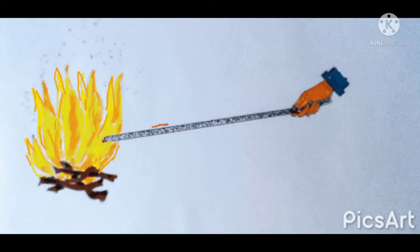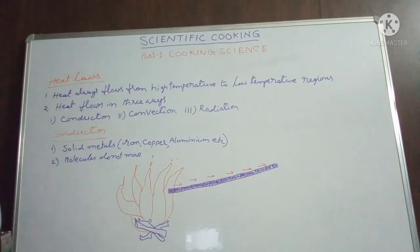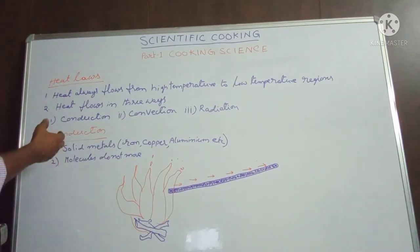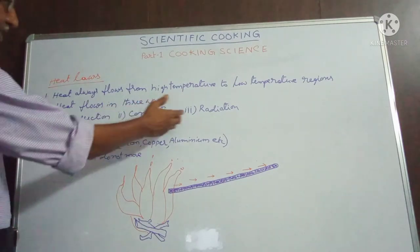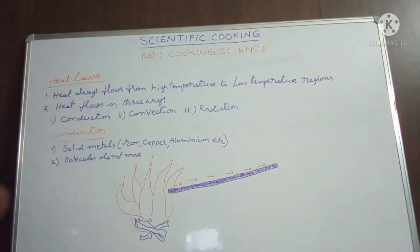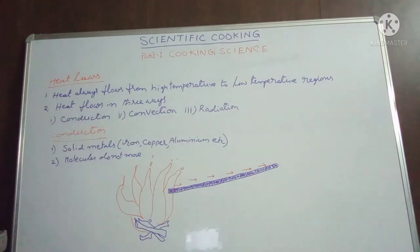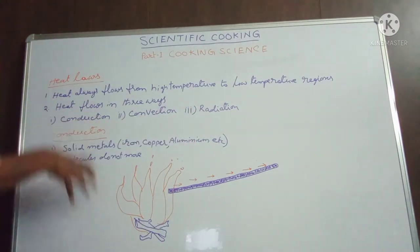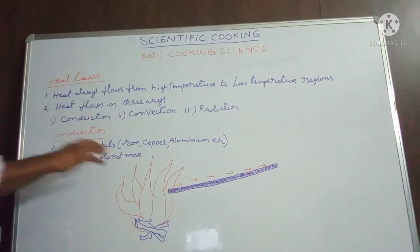Here, the heat is conducting in an iron rod from high temperature to low temperature. Conduction is possible in solid metals like iron, copper, aluminum, etc. In this process, molecules do not move — they will be static at their own places.